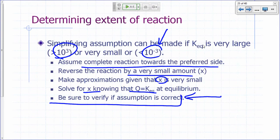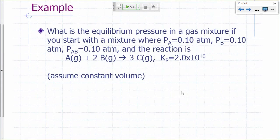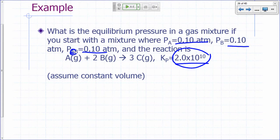So let's see if we can illustrate that with this problem. What's the equilibrium pressure in a gas mixture if you start with 0.1 atmosphere of A, 0.1 atmosphere of B, and 0.1 atmosphere of C? And KP happens to be 2.0 times 10 to the 10. Look at this number. Is that a very large or a very small number? So what do we expect at equilibrium? It's going to be mostly products.